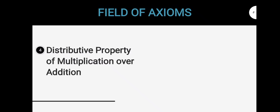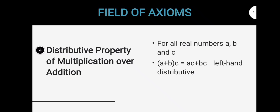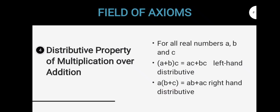The next is the distributive property of multiplication over addition. This property is generally used to remove parenthesis. It states that for all real numbers A, B, and C, the quantity A plus B times C is equal to A times C plus B times C, which is called the left-hand distributive. And we also have A multiplied to the quantity B plus C, which is equal to A times B plus A times C, which is called the right-hand distributive. We call it the left-hand distributive because we are distributing to the left, and the right-hand distributive because we are distributing to the right.